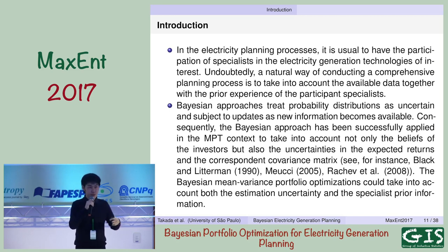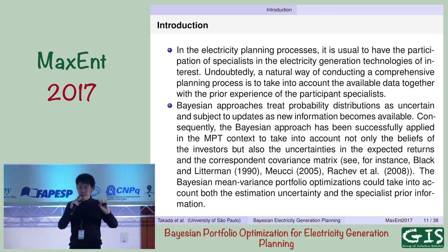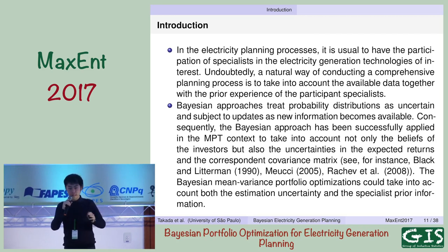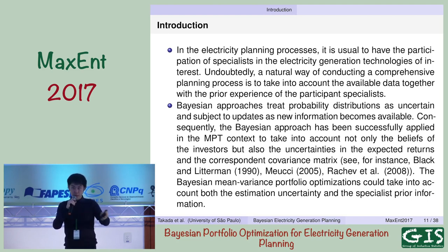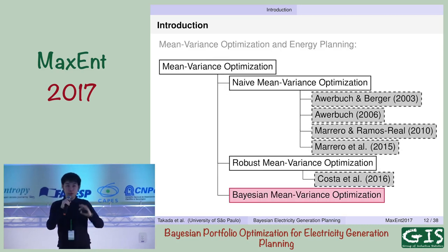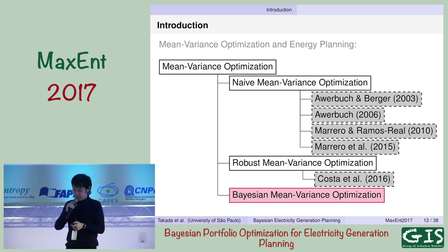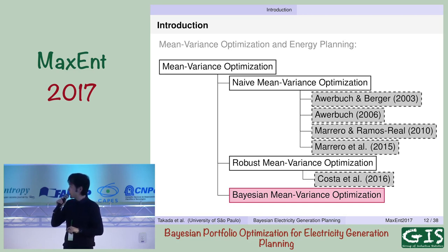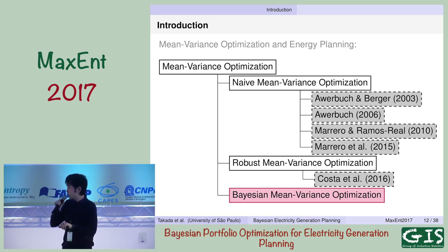In the energy planning process, it is usual to have participants who have very specific beliefs about the costs involved. The idea of the Bayesian approach here is to be able to insert those beliefs into the problem. Looking at a review of the literature, all approaches are in the mean-variance context. I'm calling the raw Markowitz application 'naive mean-variance optimization.' There is a very recent work from Costa et al. using robust mean-variance optimization, and now I'm proposing the Bayesian mean-variance optimization to make the framework more flexible.